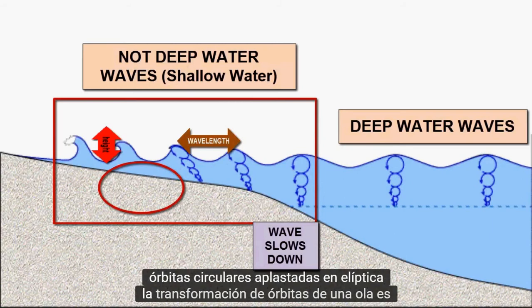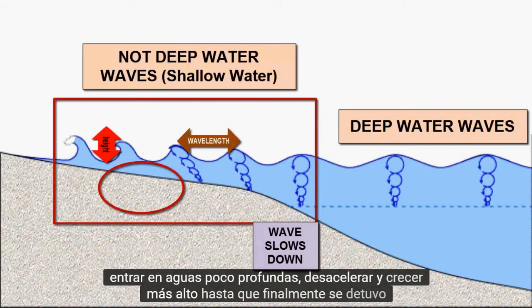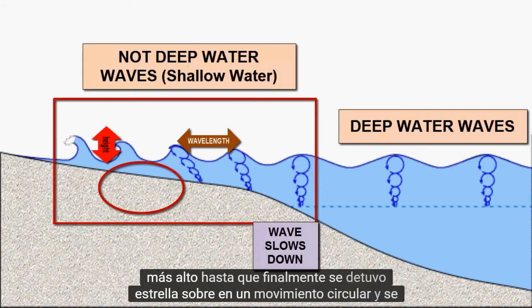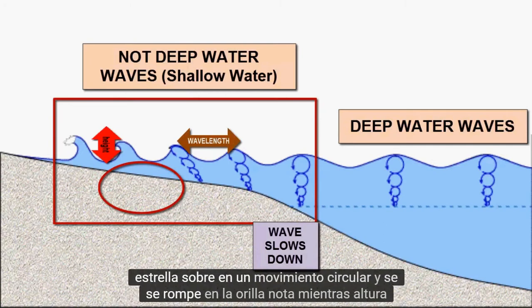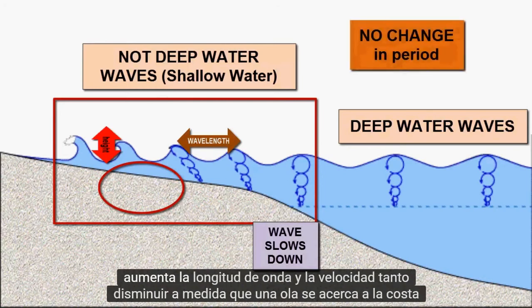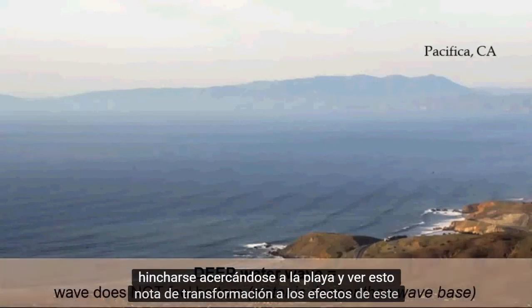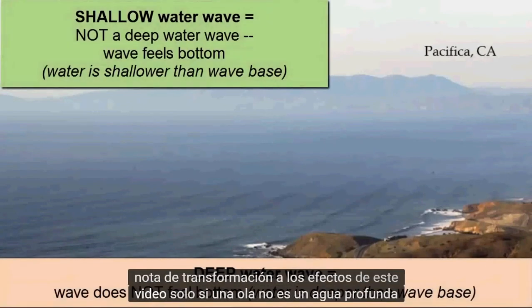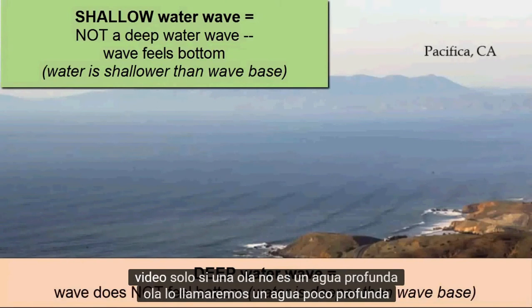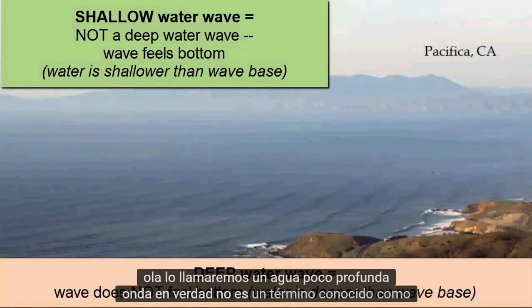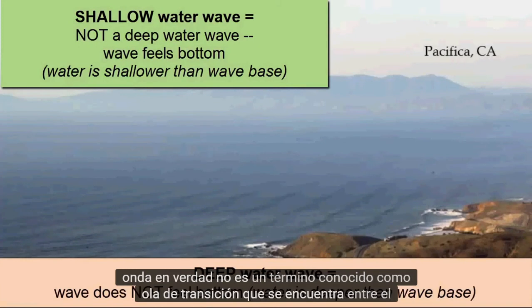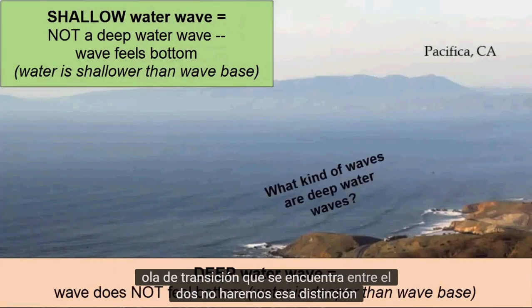The transformation of a wave as it enters shallow water — slowing and growing taller until eventually its top crashes over in a circular motion and it breaks onto the shore. Note: while height increases and wavelength and speed both decrease as a wave approaches shore, the period stays the same. We can now return to this image from Pacifica of actual swell approaching the beach and see this transformation. For purposes of this video only, if a wave is not a deep water wave, we will call it a shallow water wave. In truth, there is a term known as a transitional wave which sits between the two, but we will not make that distinction.